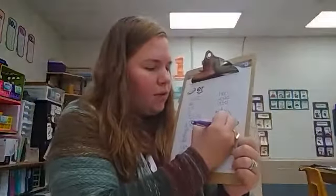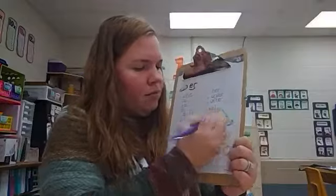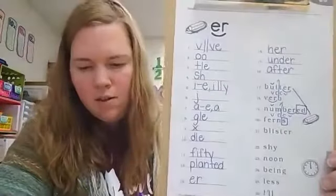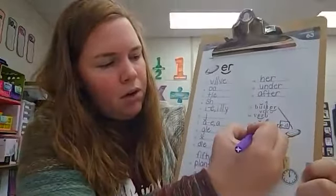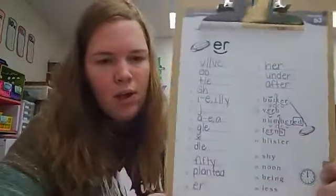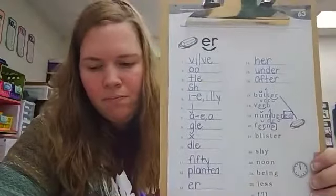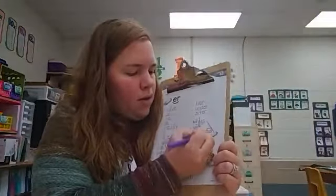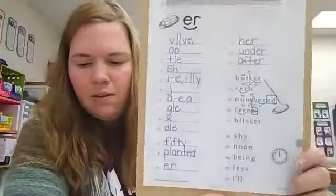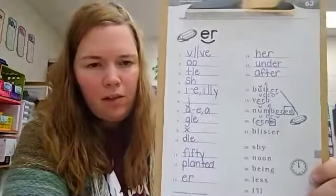There is a suffix, an ending S. Put a box around that on number 20. We have combination E-R. Can you read number 20? The word is ferns, ferns. Since the S makes the Z sound, we are going to put a line through it.